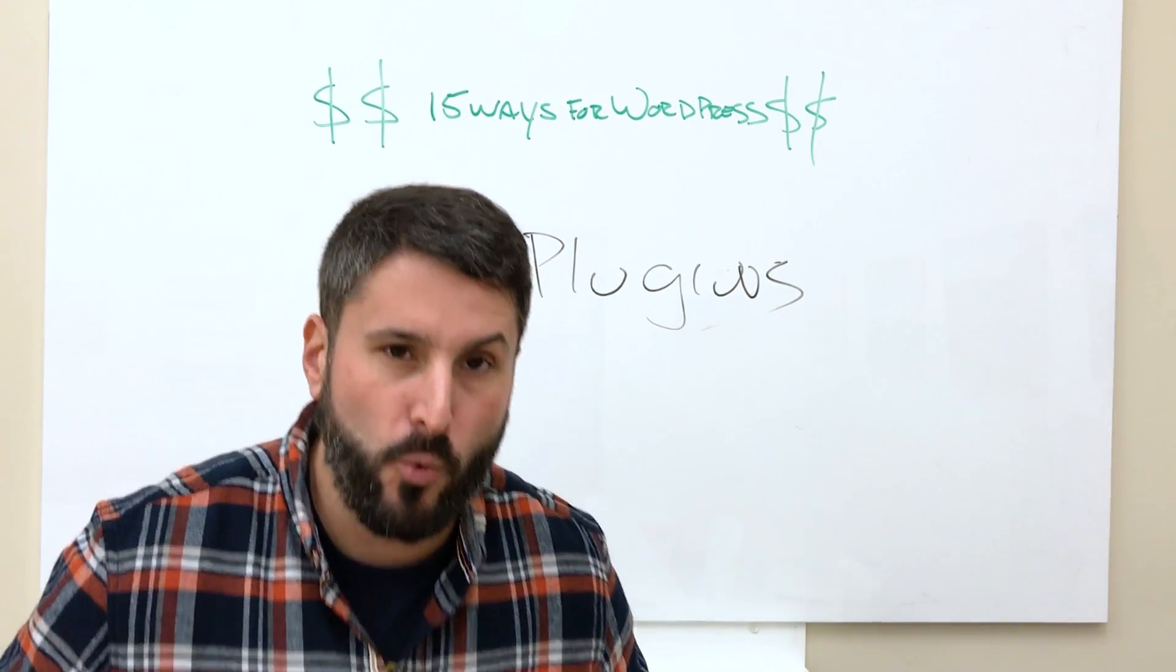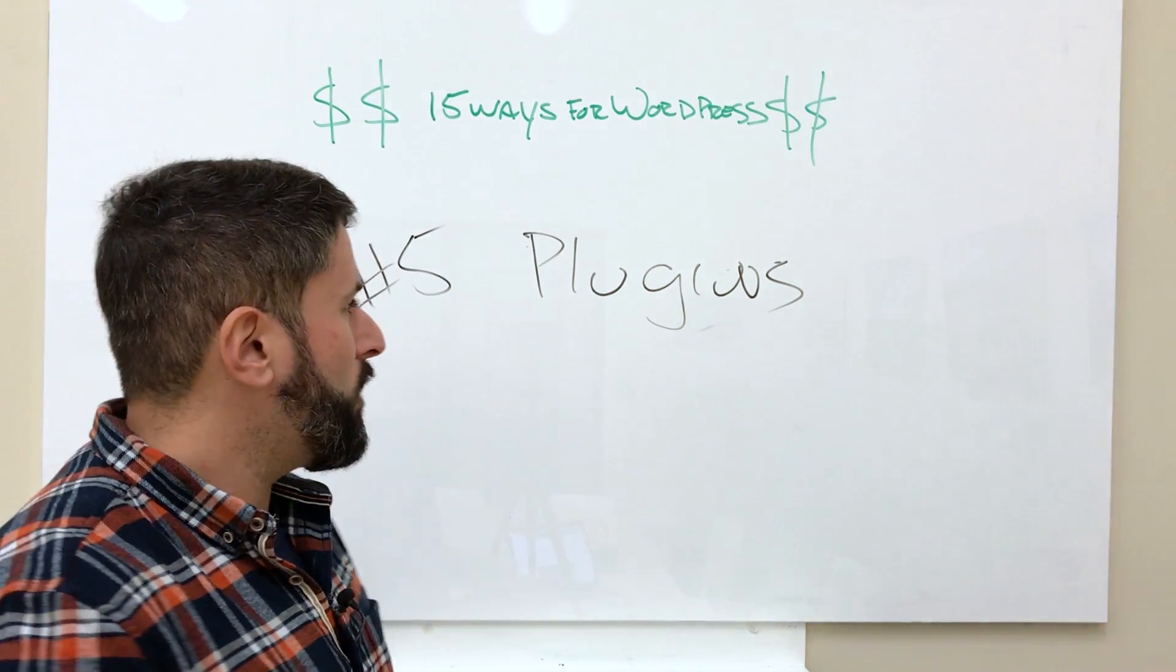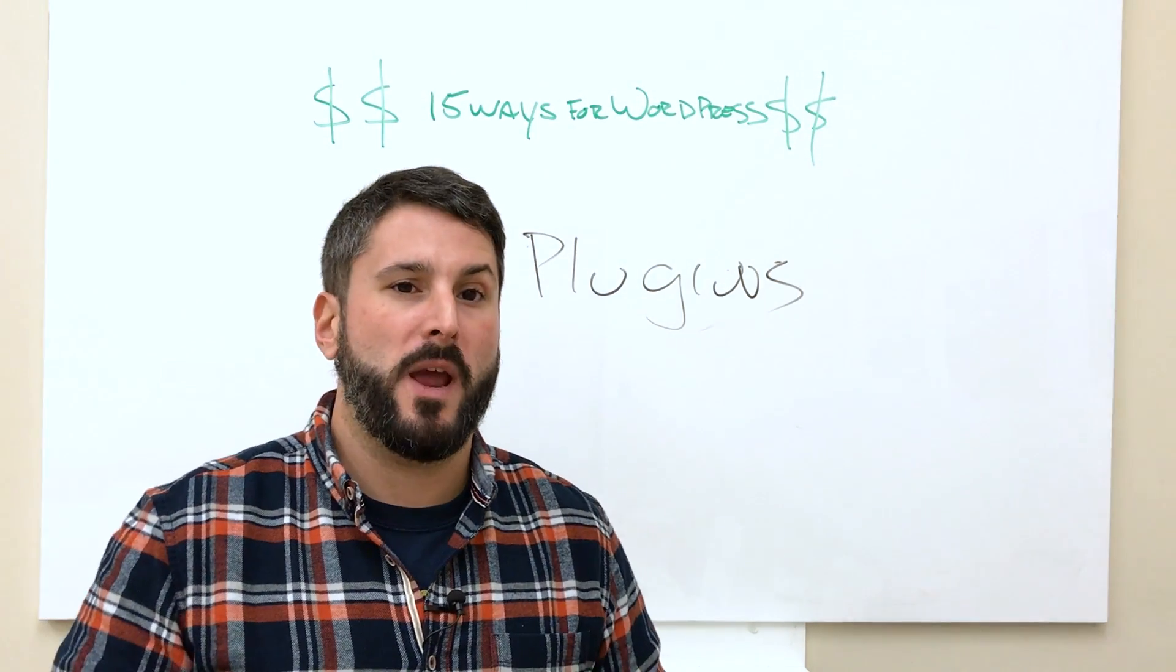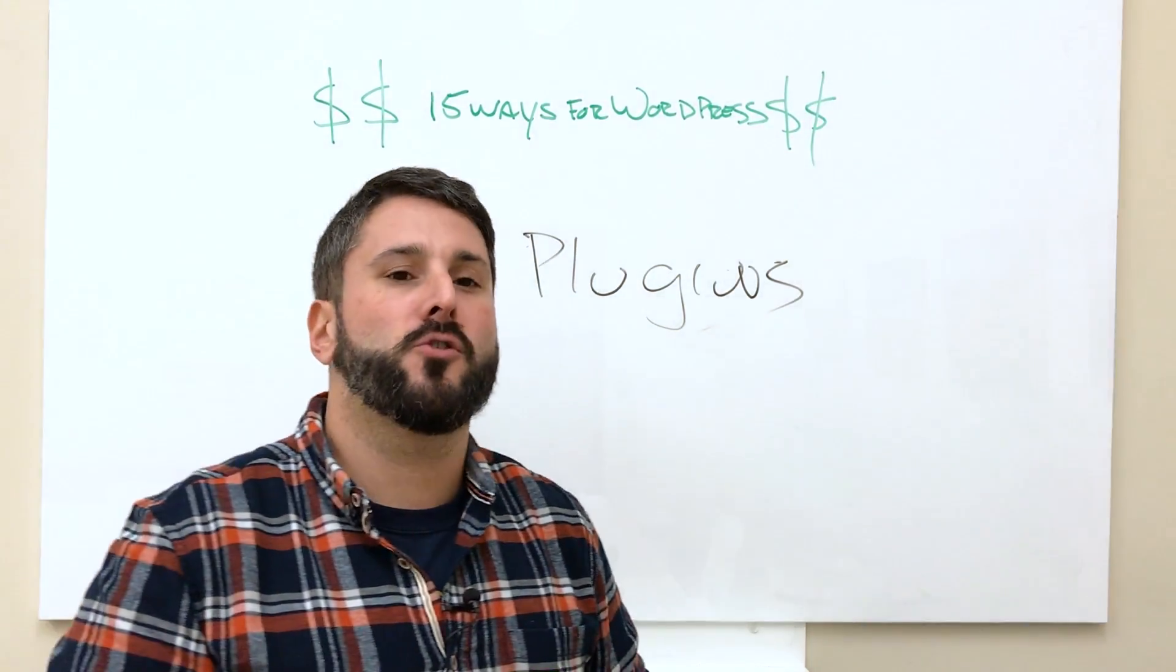Just like you would distribute your WordPress themes through WordPress.org or CodeCanyon, which is another Envato network marketplace. Plugins is a great way to make some revenue. But if you're looking for ways to make money in WordPress, this is probably the hottest thing that you could do right now.